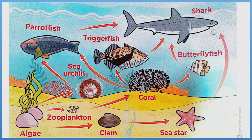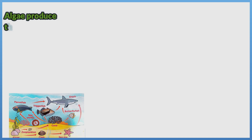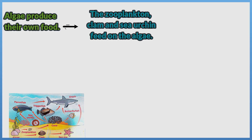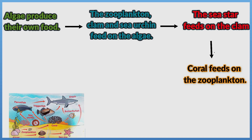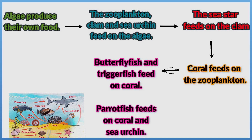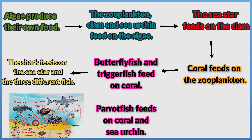Look at this marine food web, then observe which organisms eat other organisms. Algae produce their own food. The zooplankton, clam, and sea urchin feed on the algae. The sea star feeds on the clam. Coral feeds on the zooplankton. Butterfly fish and trigger fish feed on coral. Parrot fish feeds on coral and sea urchin. The shark feeds on the sea star and the three different fish.